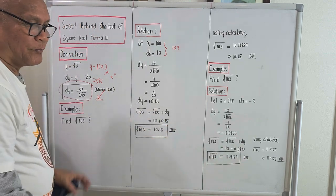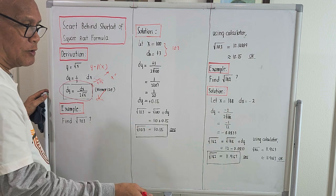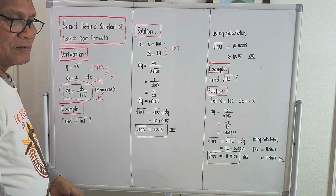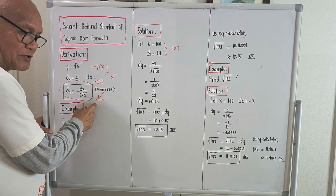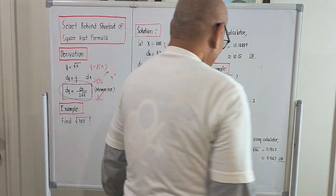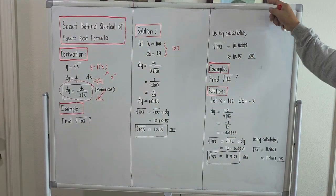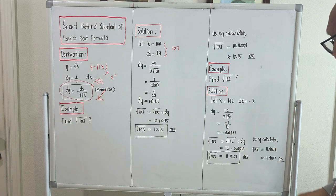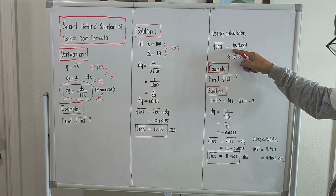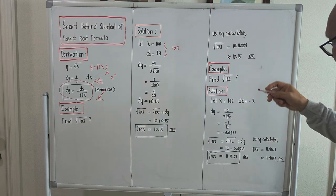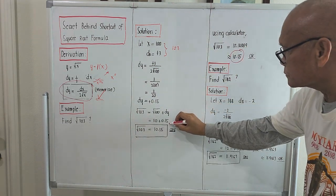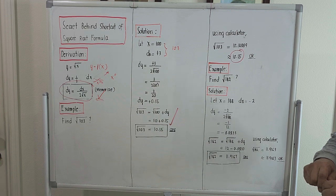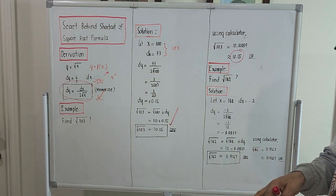It's not a trick — it emanates from differential calculus. To check the validity of the answer, the square root of 103 using a calculator gives 10.14889, which is approximately 10.15 — the same as our answer. It's not a trick; it emanates from the study of differential calculus, the formula for computing the increment in the square root, where the increment can either be a plus or a minus.